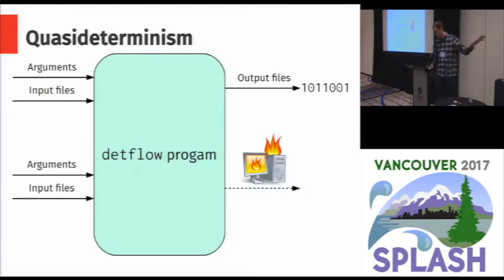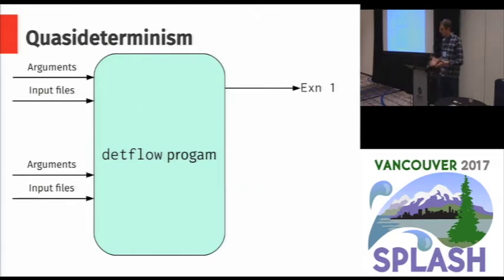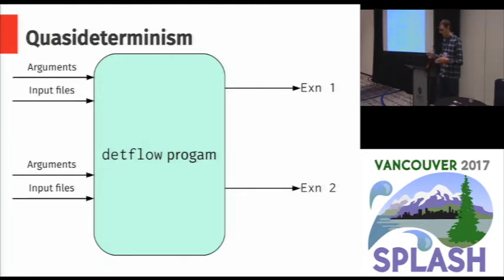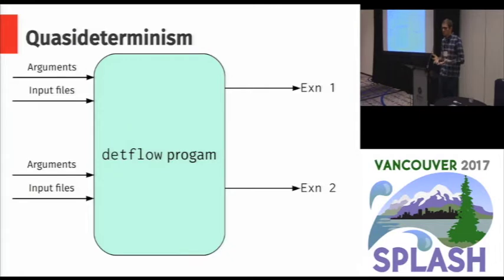Another edge case we have to consider is when exceptions are thrown. If an exception is thrown, and assuming this isn't a catastrophic exception like on the previous slide, then we should be able to guarantee that given the same set of inputs, we should also get an exception on the second invocation. We don't guarantee that the actual message from this exception will be the same every time, because that's really hard to achieve in practice, but we should be able to at least deterministically produce some exception every time.